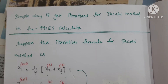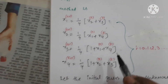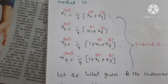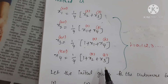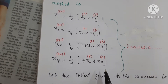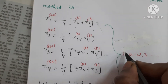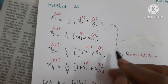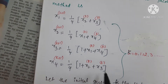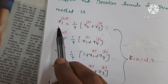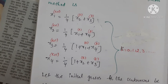Suppose the iteration formula for the Jacobi method for some linear system is taken like this. There are four unknowns x1, x2, x3, x4. It is very clear from this that if k is changing on the right side of each equation, then we are going to get the successive iterations for all the unknowns x1, x2, x3, x4.